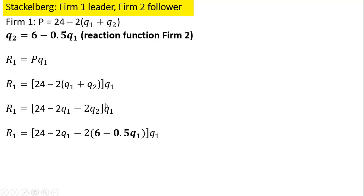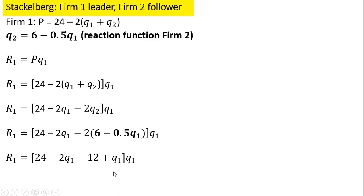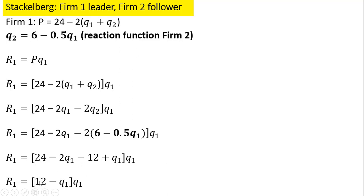Now we do a key substitution: where we have Q₂, we plug in firm 2's reaction function. When firm 1 sets its profit-maximizing output, it considers how firm 2 will respond. So we substitute firm 2's reaction function into firm 1's revenue function. Simplifying: minus 2 times 6 gives minus 12, minus 2 times minus 0.5 gives plus 1 Q₁, so 24 minus 12 is 12, and minus 2Q₁ plus Q₁ is minus Q₁. Multiplying Q₁ through, this is firm 1's revenue function.